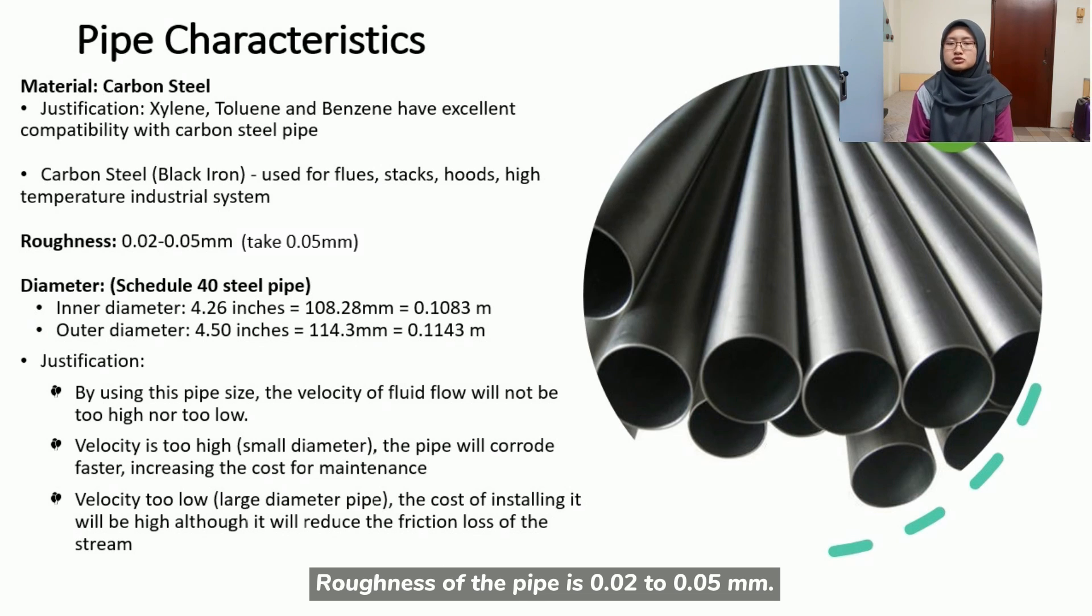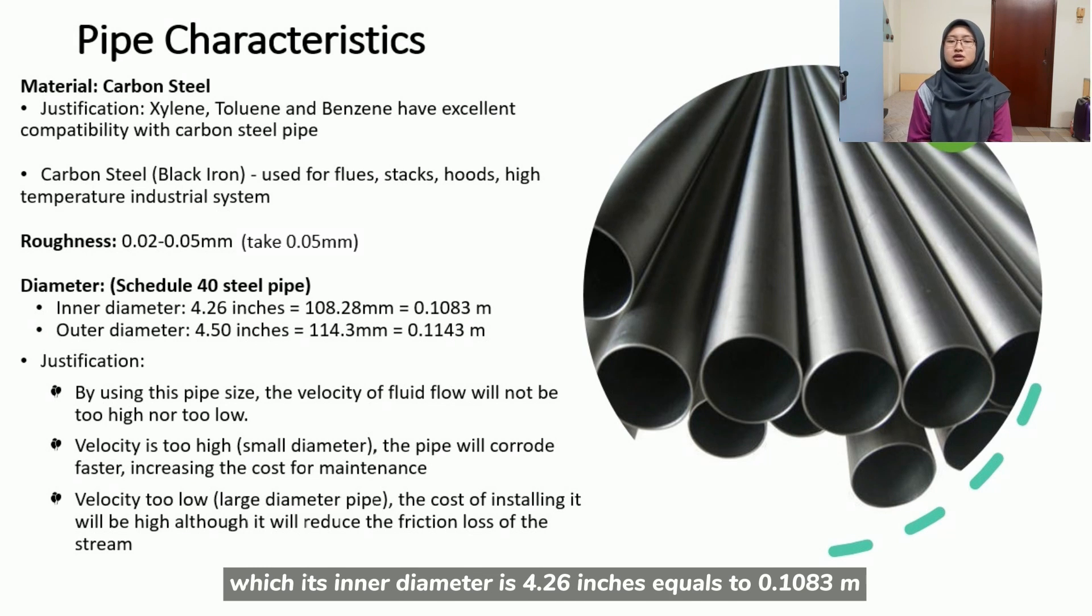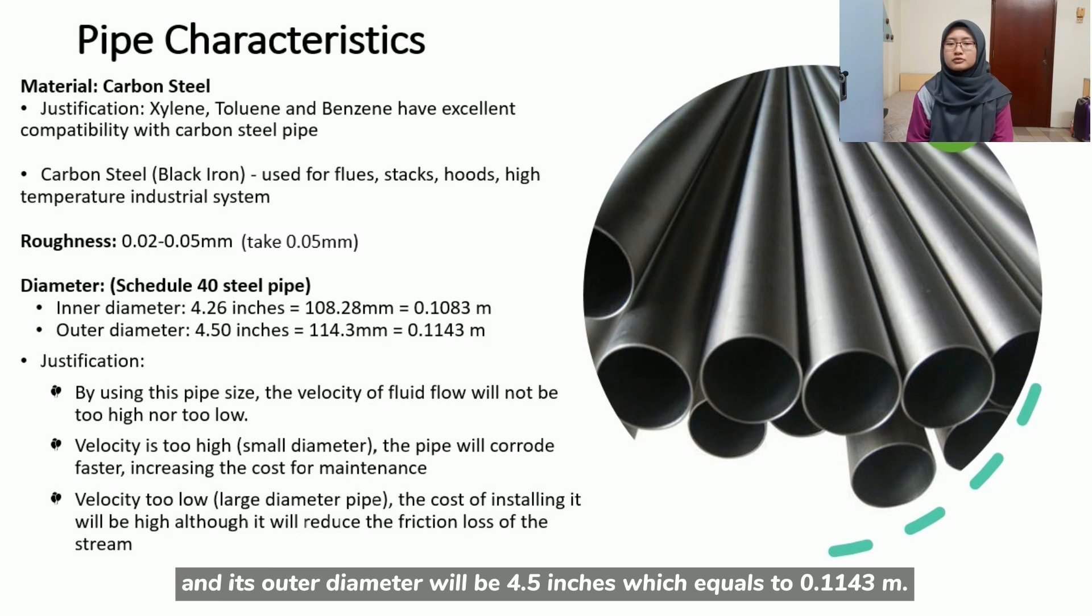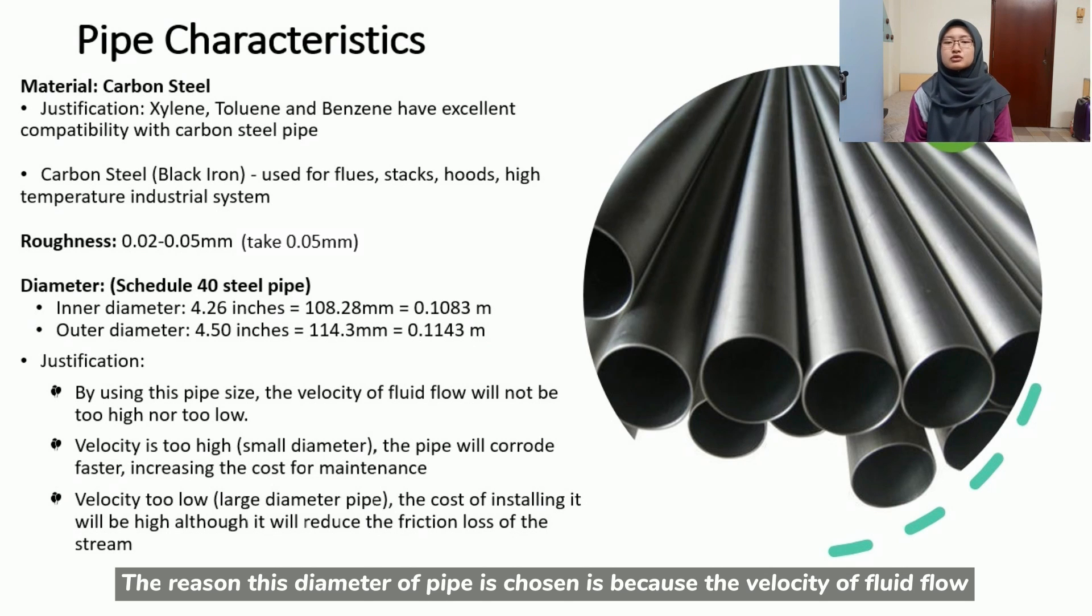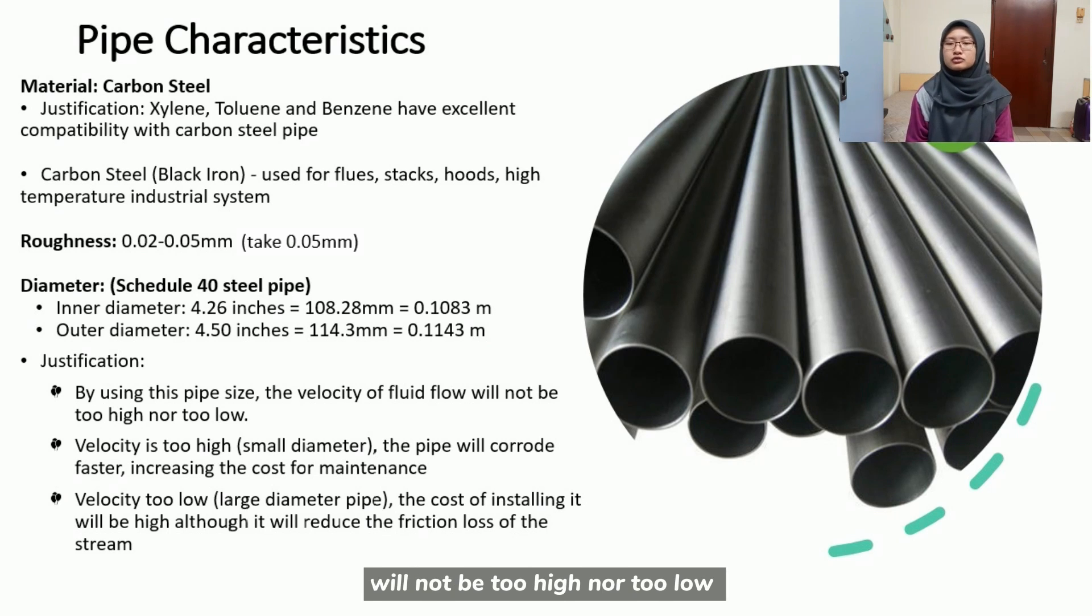Roughness of the pipe is 0.02 to 0.05 mm and we assume it to be 0.03 mm. Diameter was based on the scale of 40 steel pipe. We picked the 4 inch pipe which its inner diameter is 4.26 inches equals to 0.1083 meter and its outer diameter will be 4.50 inches equals to 0.1143 meter. The reason this diameter of pipe was chosen is because the velocity of fluid flow will not be too high nor too low.